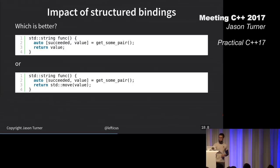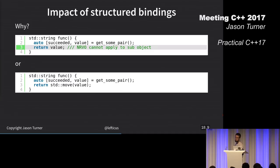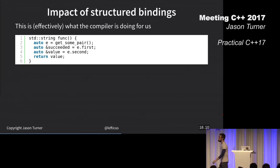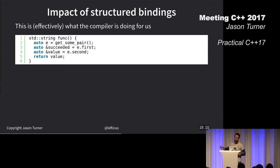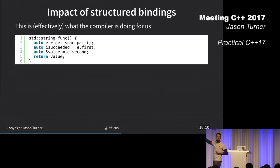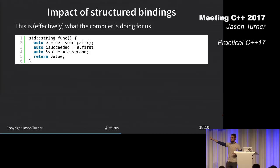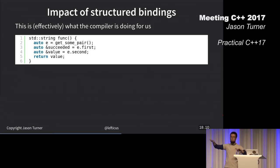This is effectively what the compiler's done for you. I use E here because that's what the standard says. It creates a mythical object called E that is the return value from your function. Then it creates references into that thing. And then we're trying to return it. So we're trying to return a reference to a sub-object effectively here. It's misleading, isn't it? It makes me sad.